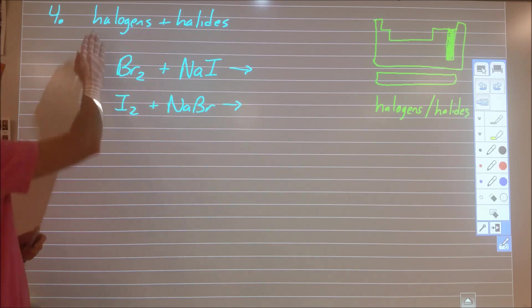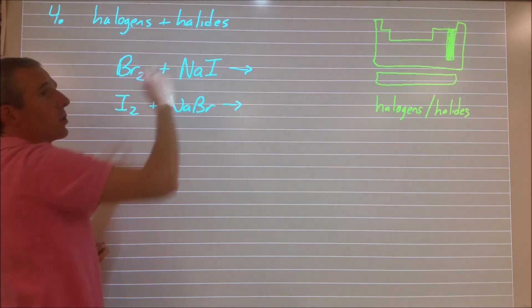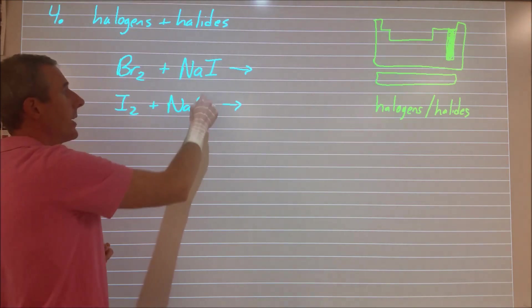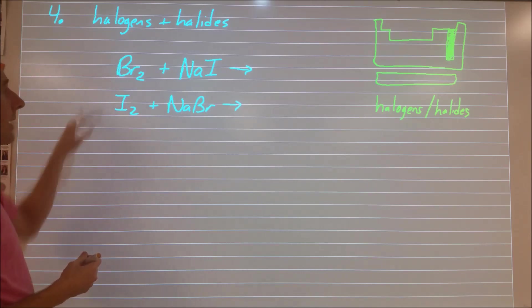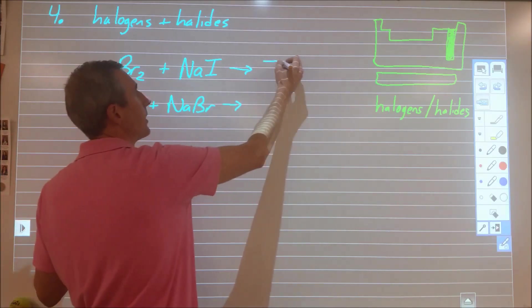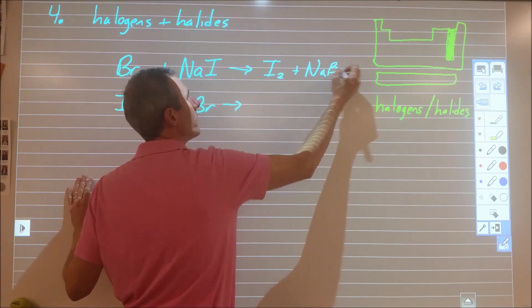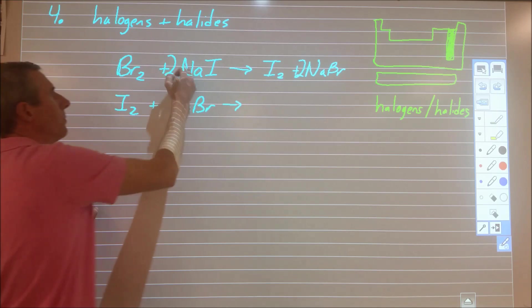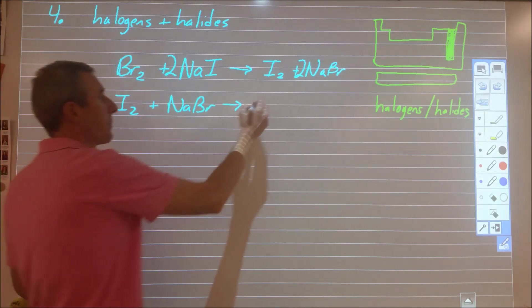We'll kind of try and go through and explain why that is. So first of all, halogens are fluorine, chlorine, bromine, and iodine. Halides are the charged versions of this. So iodide, bromide, chloride, and fluoride. So in this case, this top reaction will happen. We will end up making iodine and sodium bromide. And the balance we would need a two and two because of the halogens. And this reaction, nothing will happen.